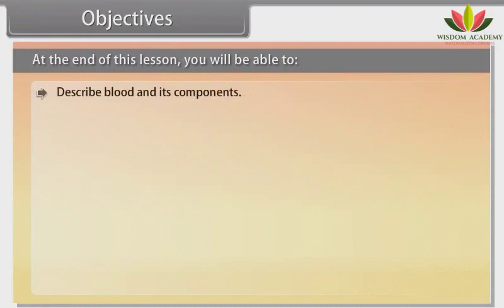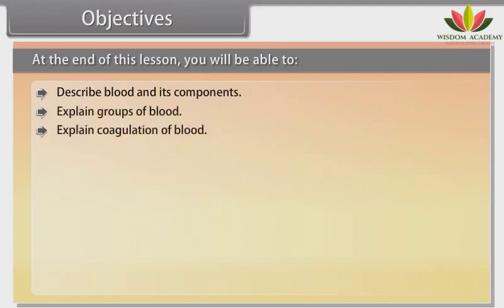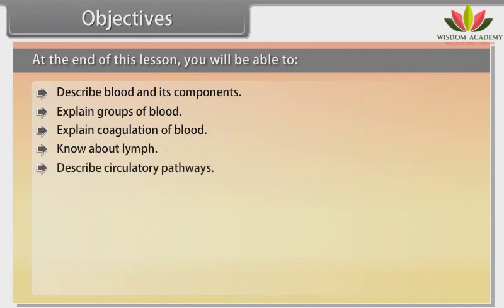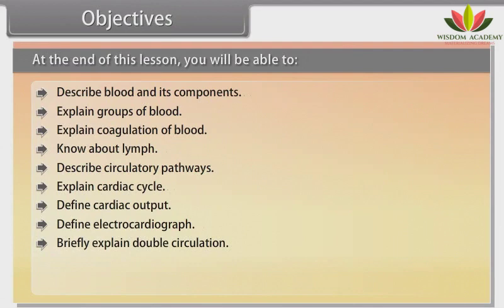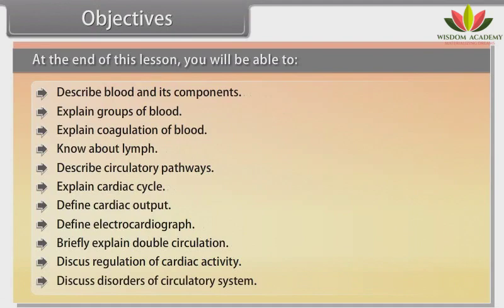Objectives. At the end of this lesson, you will be able to: describe blood and its components; explain groups of blood; explain coagulation of blood; know about lymph; describe circulatory pathways; explain cardiac cycle; define cardiac output; define electrocardiograph; briefly explain double circulation; discuss regulation of cardiac activity; and discuss disorders of the circulatory system.